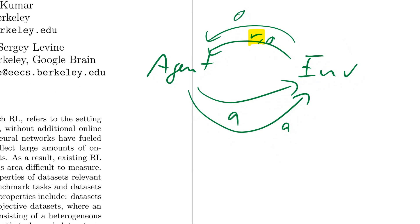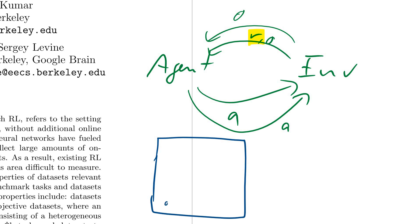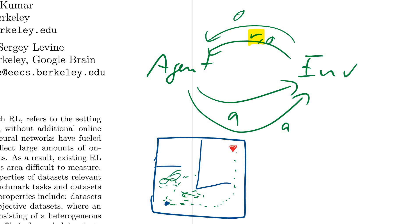Usually this is organized in episodes. If you have an environment with an agent and a goal, and there are walls — like a maze the agent has to navigate — one episode is the agent moving around until it finds the target or hits a wall. At some point you say game over. In reinforcement learning, you perform many of these episodes and learn from them.